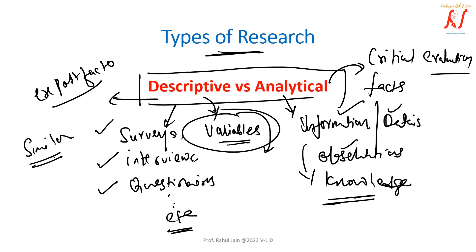In analytical research, survey methods have already been done, we have the data, and based on that we need to make a critical evaluation. This is the major difference between descriptive and analytical research. I hope the concept is clear — if you have any doubts, confusion, queries, or suggestions, please feel free to use the comment section. Have a very nice day and stay tuned for more such lectures on different types of research.